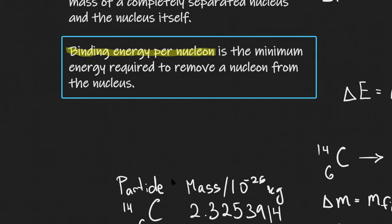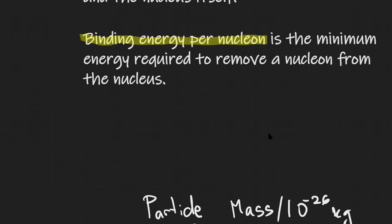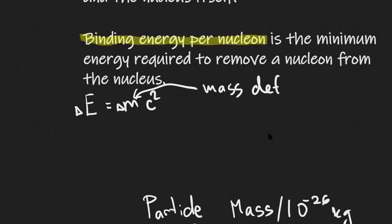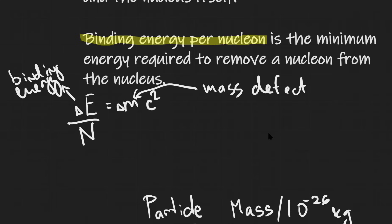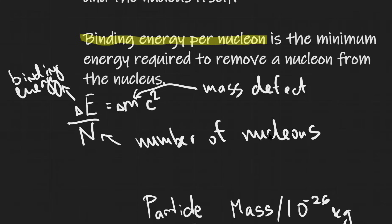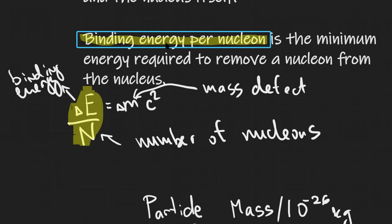Very often, questions ask us to calculate the binding energy per nucleon, which is the minimum energy required to remove a nucleon from the nucleus. To calculate binding energy, we use E equals delta M c squared, where delta M is the mass defect and E is the binding energy. To find the binding energy per nucleon, we take delta E equals delta M c squared and divide by N, where N is the number of nucleons.